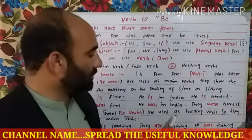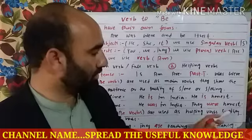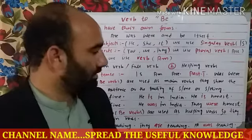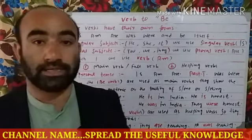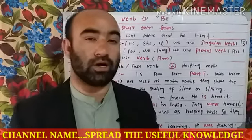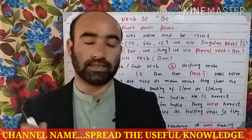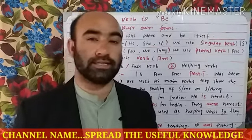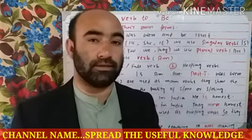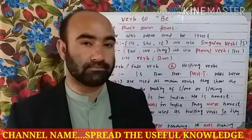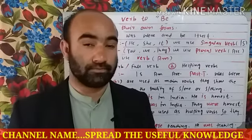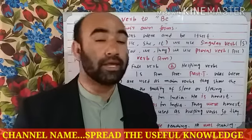But when these be verbs are used as helping verbs, they help the main verb. For example: 'He is going to Canada', 'He is teaching', 'They are teaching', 'We are teaching', 'He was teaching', 'They were teaching'. In 'He is teaching', the main verb is 'teaching' and 'is' helps the main verb — it tells us about the tense and supports the main verb.